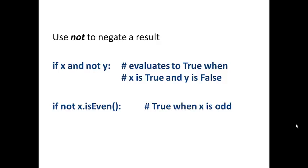And if x actually is even, we're going to negate that and it's going to return false. And when x is odd, it's going to return true. So the opposite of what it would do without the not.